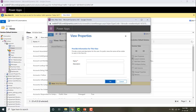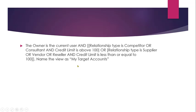I want to create a view with the name 'My Target Accounts'. The filter criteria is: the owner should be equal to the current user, and relationship type is equal to competitor or consultant, and credit limit is above 100 — or relationship type is supplier, vendor, or reseller, and credit limit is less than or equal to 100.